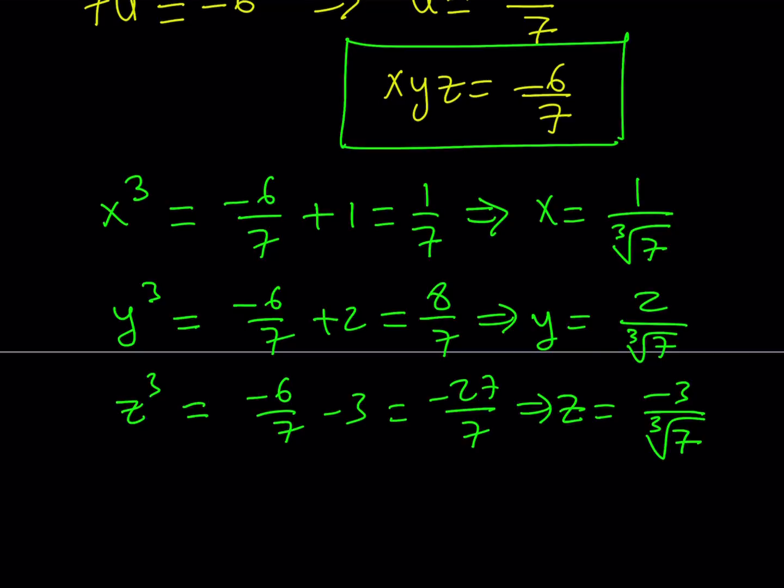Are there any other solutions? Nope. Cube root of 7 only has one value, so if x cubed equals a number, you only get one solution. Of course, we're talking about real solutions. If you get into complex solutions, 1 over 7 has 3 cube roots.